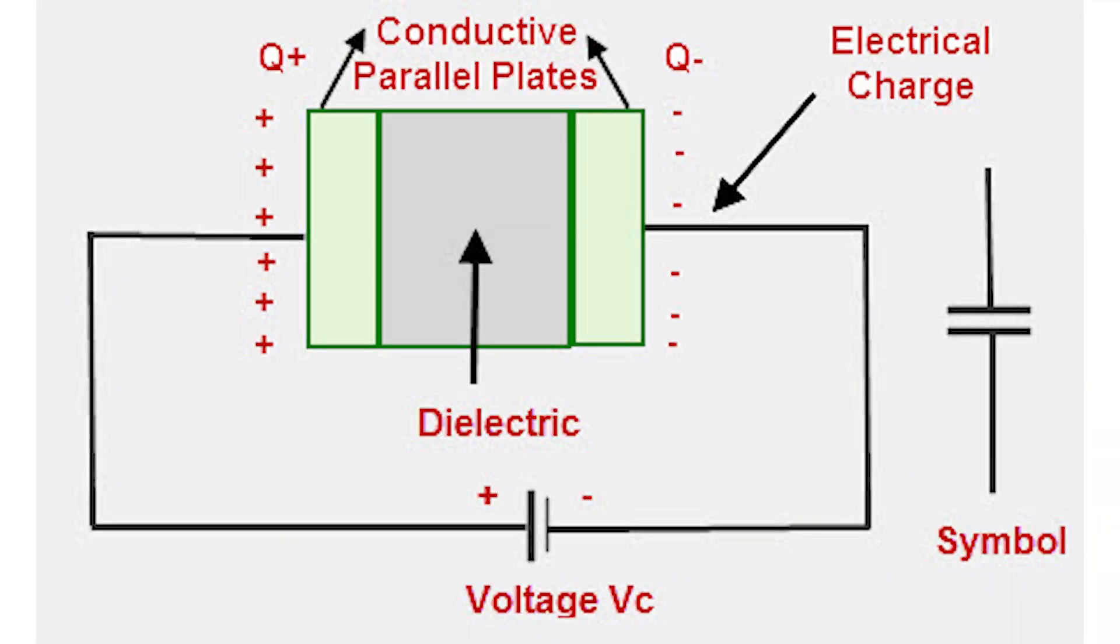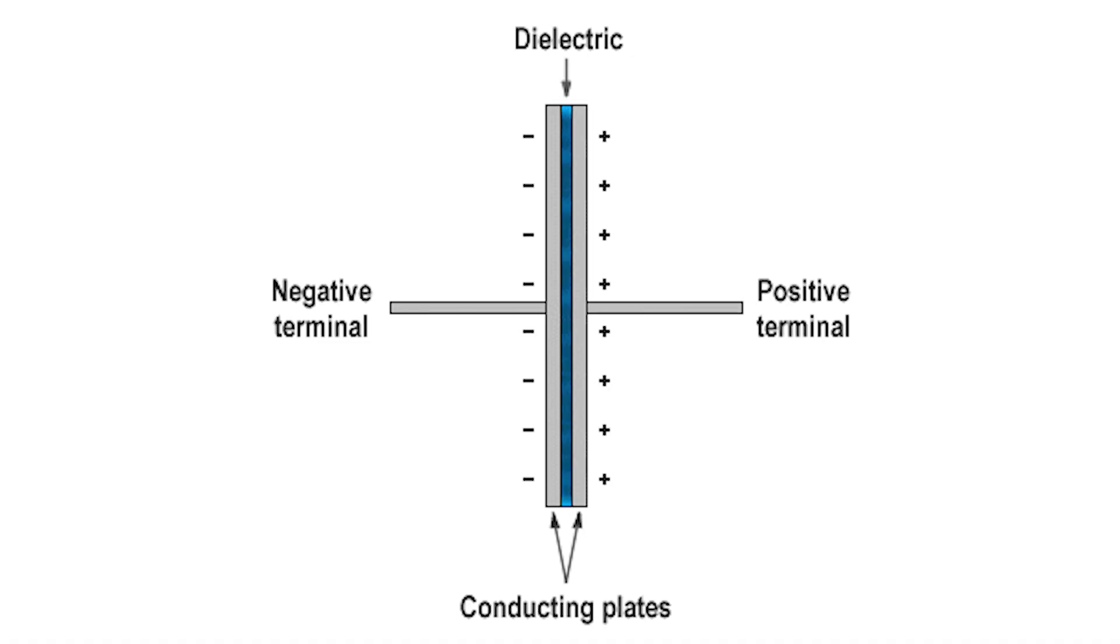When an electric current flows to the capacitor, it charges the capacitor such that the electrostatic field becomes stronger and more energy is stored between the plates.